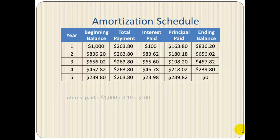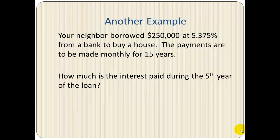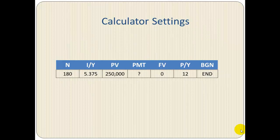Let's look at another example: a neighbor borrowed two hundred and fifty thousand dollars at five point three seven five percent from a bank to buy a house, with payments made on a monthly basis for fifteen years. How much interest was paid during the fifth year of the loan? The financial calculator settings are: N equals 180 (that's 180 months), the annual interest rate is 5.375 percent, the present value is the loan amount of two hundred and fifty thousand dollars, and payments per year equals twelve to reflect monthly payments.